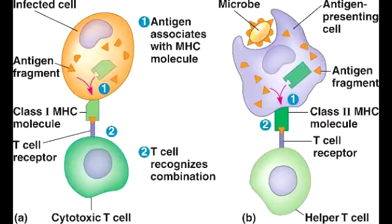What is MHC1 encoded by? MHC1 is encoded by HLA-A, HLA-B, and HLA-C.